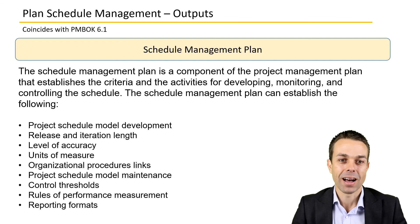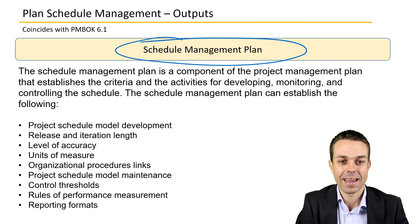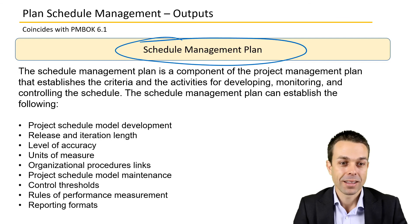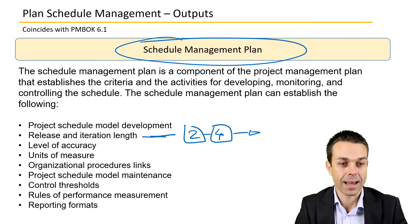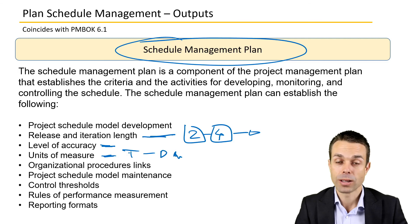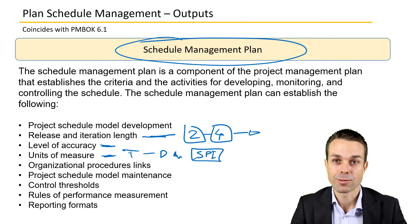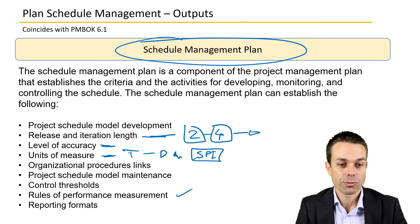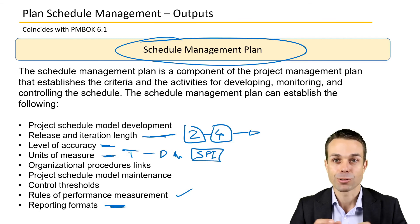The output of Plan Schedule Management is the schedule management plan itself. It establishes things like iteration length — is it two weeks, four weeks? — the level of accuracy required for activities, units of measure (t-shirt sizes, days, weeks, or months), and how we're going to control the schedule, such as using the schedule performance index. It also defines rules for performance measurement, reporting formats, and any other items related to planning and creating the schedule. That covers all the information from Plan Schedule Management as part of the PMBOK Guide.